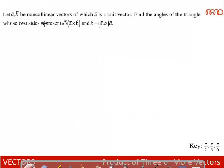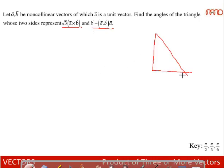New problem: Let a, b be non-collinear vectors where a is a unit vector. Find the angles of the triangle whose sides represent √3(a×b) and b − (a·b)a. The vector a×b is perpendicular to the plane of a and b, while b − (a·b)a is a linear combination of a and b. So these two vectors are perpendicular to one another, meaning this is a right-angled triangle.